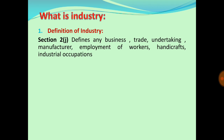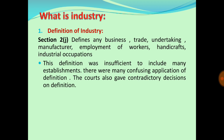So certain activities are mentioned as industry — business activity, trade activity, certain undertakings related to manufacture where particular products or services are produced, employment of workers, handicrafts, and industrial occupations. However, the definition given in Section 2(z) was not exhaustive and its nature was not very clear. Therefore this definition was insufficient to include all the kinds of establishments that should be covered under industry.